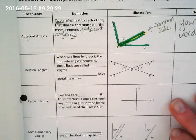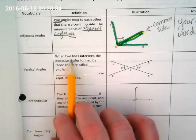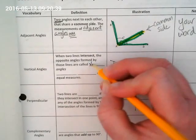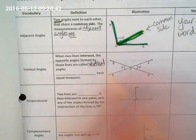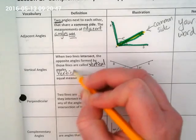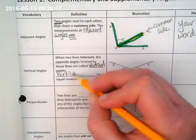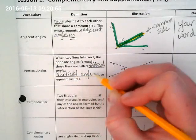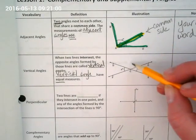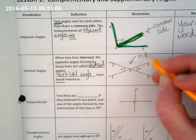Our next vocabulary term is vertical angles. Can everybody say vertical angles? Vertical angles. When two lines intersect, the opposite angles formed by those lines are called vertical angles. And we're going to write the term one more time. Vertical angles have equal measures.